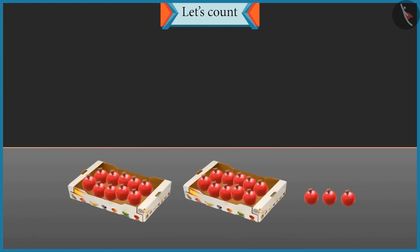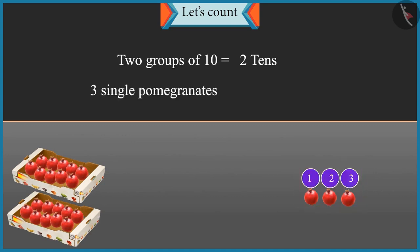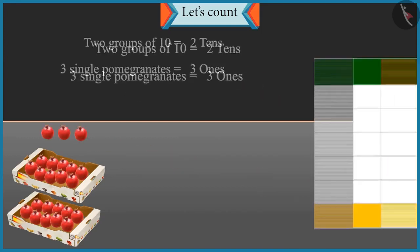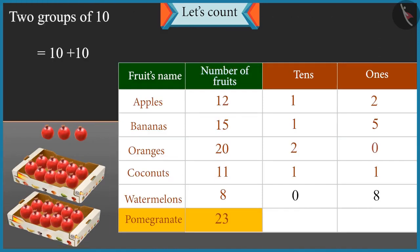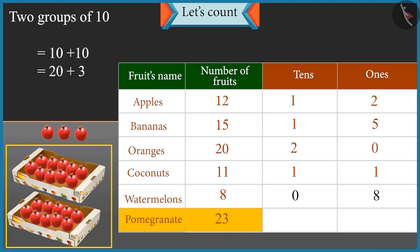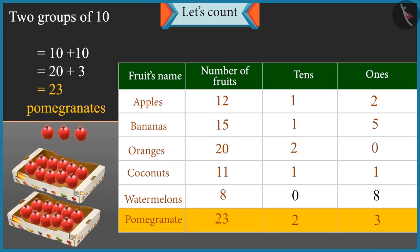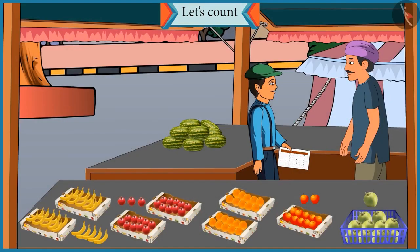Chotu, I have counted the pomegranates and placed them in the groups of tens. Can you tell me how many pomegranates are there? Uncle, there are two groups of tens, that means two tens, and three single pomegranates, that means three ones. Uncle, there are twenty-three pomegranates. Two groups of tens, so it will be ten and ten: twenty. And there are three more pomegranates, so it will be twenty-one, twenty-two and twenty-three. There are twenty-three pomegranates. Absolutely right.